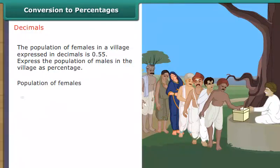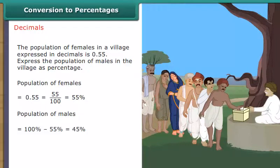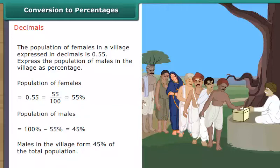Population of females is equal to 0.55, which equals 55 upon 100, which is equal to 55%. Population of males is equal to 100% minus 55%, which is equal to 45%. Males in the village form 45% of the total population.